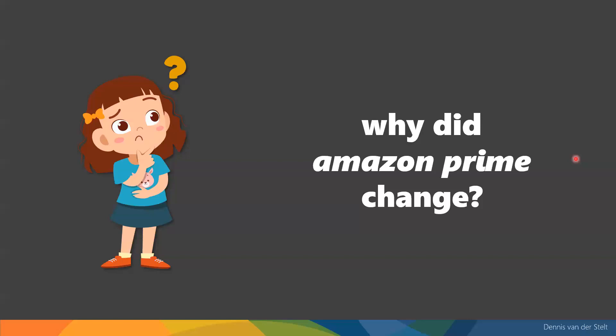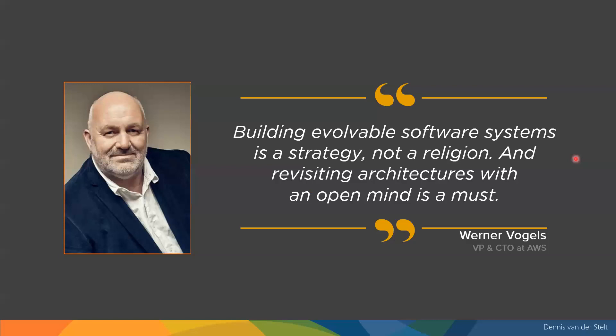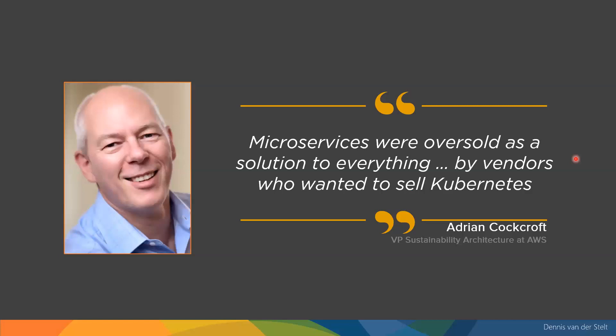So if we say microservices and independently deployable microservices allow us to scale better, that's not always the case — Prime Video basically proved that. Why did Amazon Prime change? There are some theories. Werner Vogels at AWS said they just evolved their software architecture — you should revisit your architecture from time to time with an open mind, not sticking too much to a certain technology or architectural style. And Adrian Cockcroft at AWS also said microservices were oversold as a solution to everything, and then said something interesting: by vendors who wanted to sell Kubernetes.